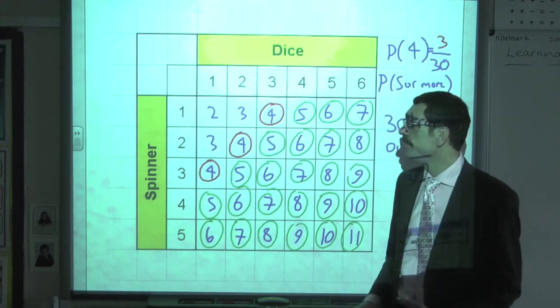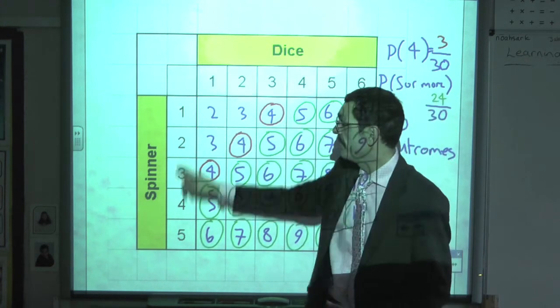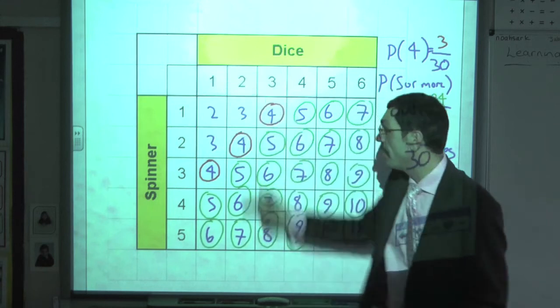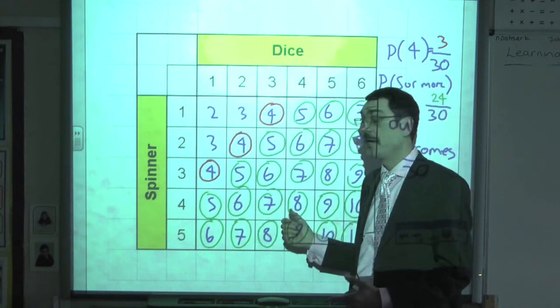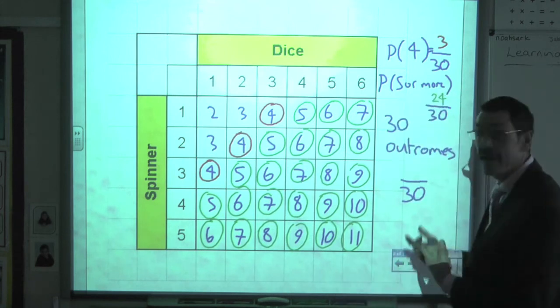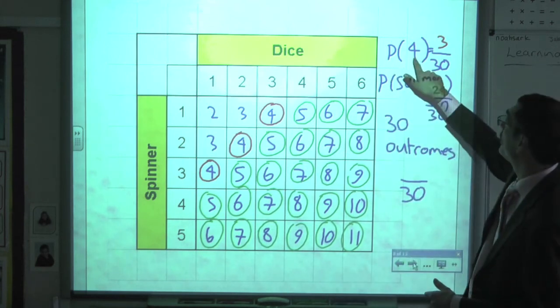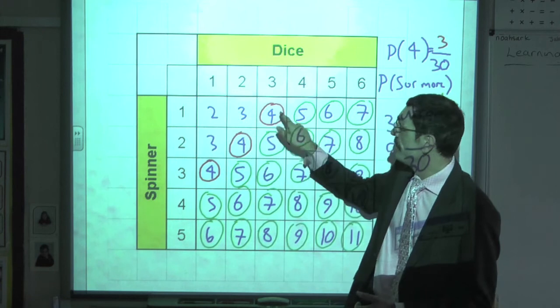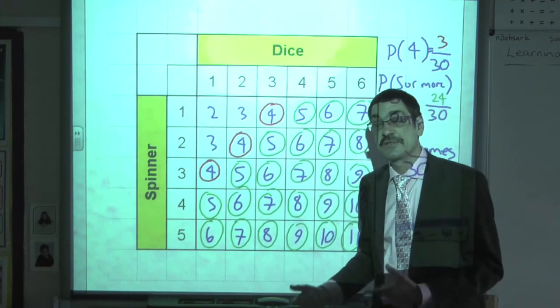So the way you do it is there's your outcome for each event at the side. Put your columns down and your rows across. That's your total number of outcomes. Then we select our desired outcomes. So if we want probability of 4, 1, 2, 3 fours on there. So the probability is 3 out of 30.